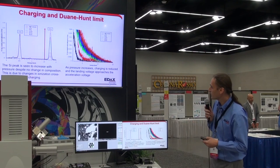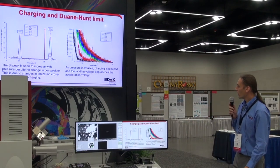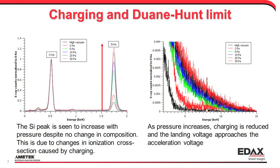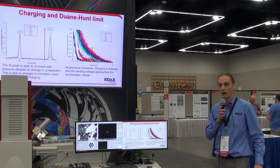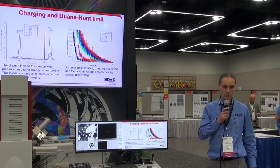This change is because I'm changing my ionization cross-section as my landing voltage changes. If we look at the background tail — I have 15 kilovolts of acceleration voltage, so my plot goes from 0 to 15 — as I go to higher pressures, the background tail stretches all the way out to 15. At 30 pascals I no longer have any charge. But as my pressure decreases down to high vacuum, that tail moves further and further in; I get more and more charge buildup, meaning my Duane-Hunt limit moves in.